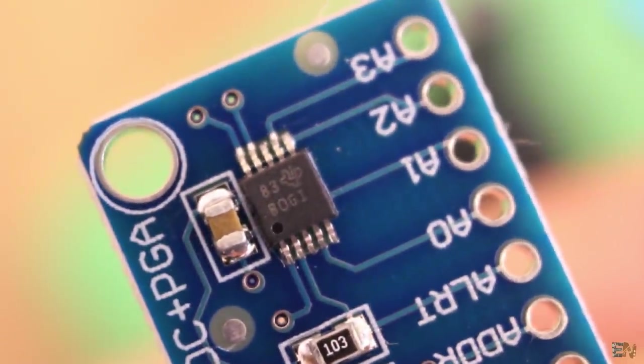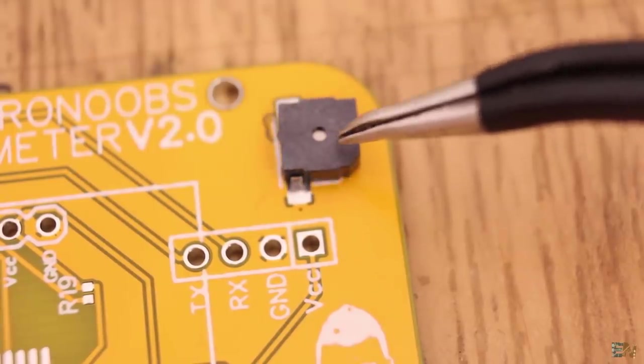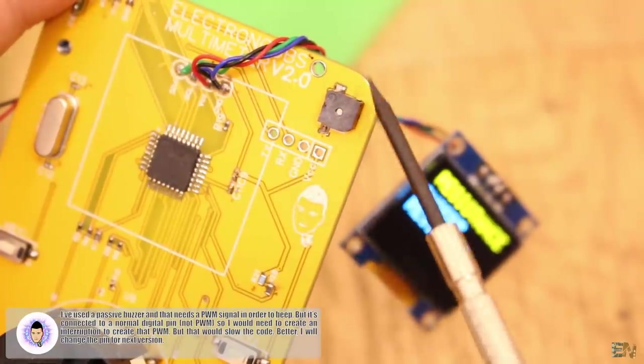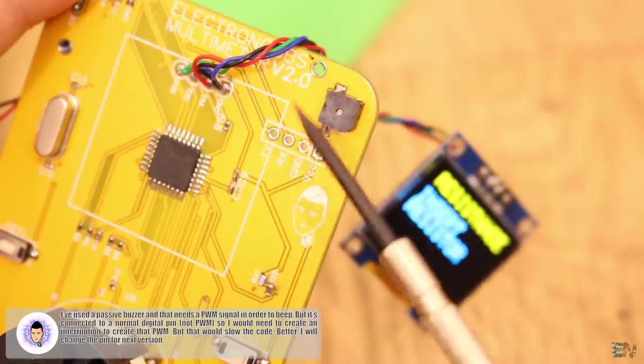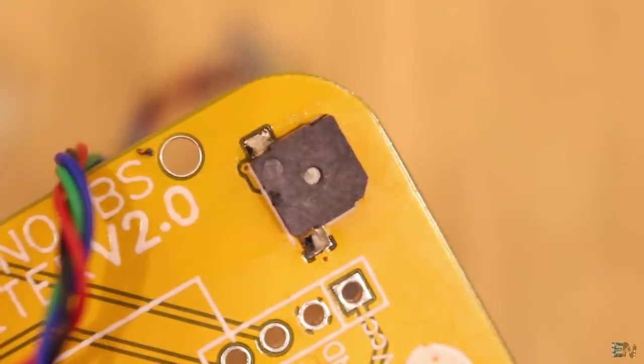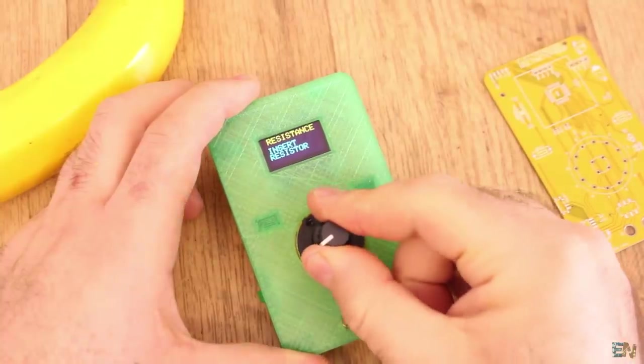In this mode, we also have a buzzer that could be used to detect very low resistance and that meaning detecting short circuits. The problem is that this buzzer is a passive one and it needs a PWM signal but this one is connected to a normal digital pin. Anyway, let's go to the next mode.